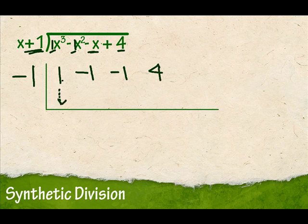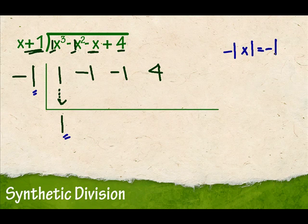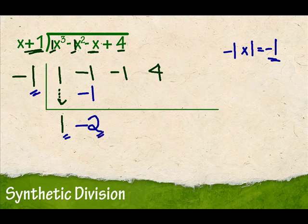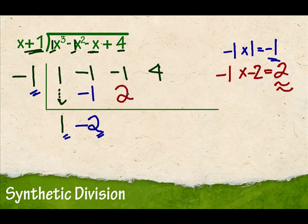I bring this number straight down — it doesn't matter what the number is, it comes straight down. Now my next step is to take negative 1 times 1. So negative 1 times 1 is negative 1, and this number goes right here. Then I add down: negative 1 plus negative 1 is negative 2. Then I'm going to take negative 1 times negative 2, which is 2. Now that number goes right here, and I'm going to add down again. Negative 1 plus 2 is a positive 1.